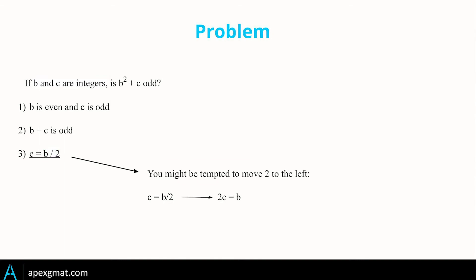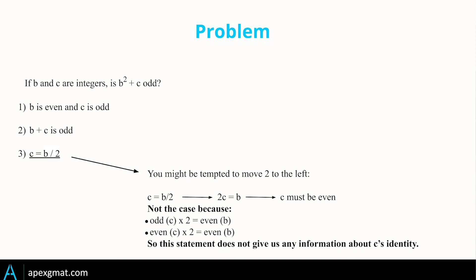It's tempting to move the 2 over and say 2c = b, then conclude c is even — but that doesn't hold up. Multiplying c — whether odd or even — by 2 will always result in an even number, so you can't determine c's parity. This is a really great problem form because this pattern of even/odd identities with different embedded equations, hiding whether b, c, m, n, x, y, or p, q are odd or even, is a very common trope especially at the more challenging 700+ levels of the GMAT.